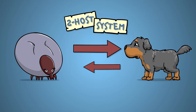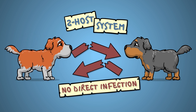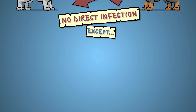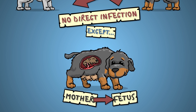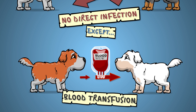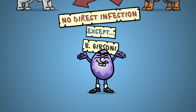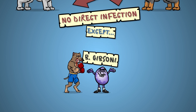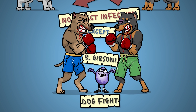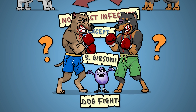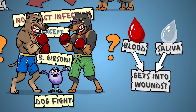Because of this two-host system, dogs generally cannot infect other dogs directly. However, there are exceptions. Pregnant bitches can pass the parasite onto their pups, and blood transfusion can give dogs Babesiosis if the donor is infected. Babesia gibsoni, one of the small Babesia, has a history of spreading among fighting dogs during illegal dog fights through uncertain means — it probably has something to do with blood and open wounds and bites.